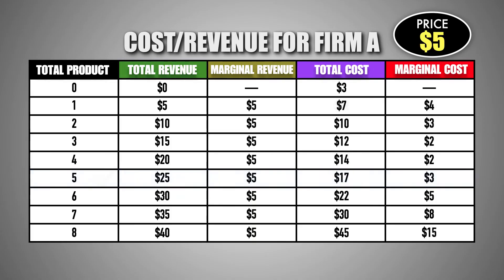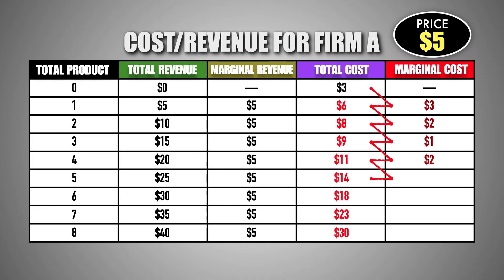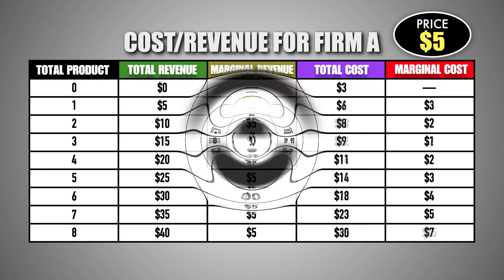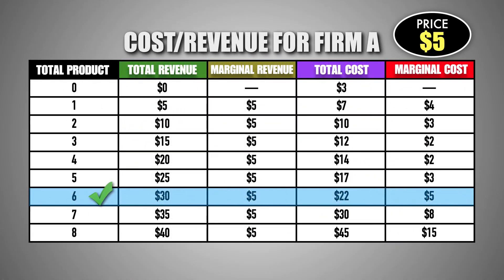Likewise, if variable production costs were to decrease, total costs would fall for the firm. Because total production costs are now less expensive, the marginal cost paid by the firm to produce each unit of good M has also decreased. This means that the firm now has a motive to produce a greater quantity of output. Before variable costs fell, the firm stopped production at six units because the marginal revenue of the sixth unit equaled its marginal cost, and producing the seventh unit would detract from profits because the marginal cost to produce it was $3 more than the marginal revenue it would generate.